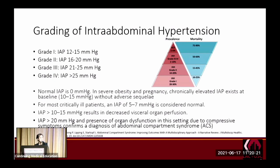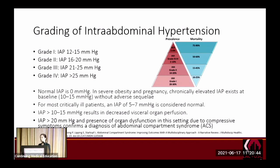There is a grading system for intra-abdominal hypertension, going from grade one to four, with four being the worst. Grade one intra-abdominal hypertension occurs in about 30% of critically ill patients, and the occurrence decreases as the grade increases. However, as the grade increases, mortality also increases.